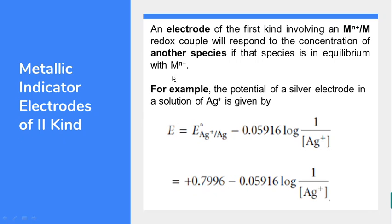Moving to metallic indicator electrodes of the second kind: the same metallic indicator electrode of the first kind will respond to the concentration of another species which is in equilibrium with Mn+. So a metallic indicator electrode of the first kind is used to determine the concentration of another species in equilibrium with the ionic species of the metallic electrode — such electrodes are called metallic indicator electrodes of the second kind.